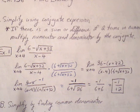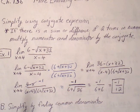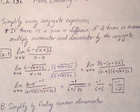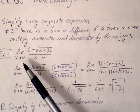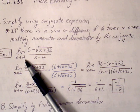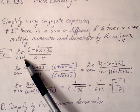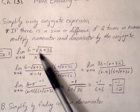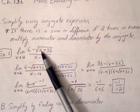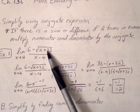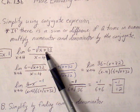Example 1: the limit of 6 minus root of (x plus 32) over (x minus 4). The first thing we always do is plug in that target x value. So if we plug 4 in for x, we're going to get 4 plus 32, which is root 36.